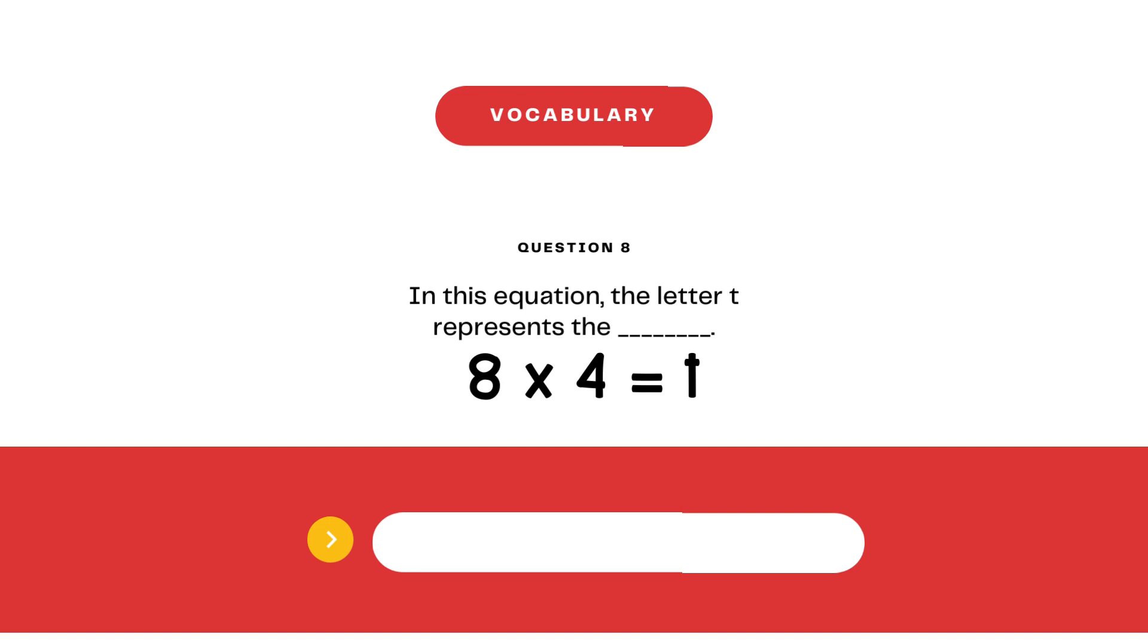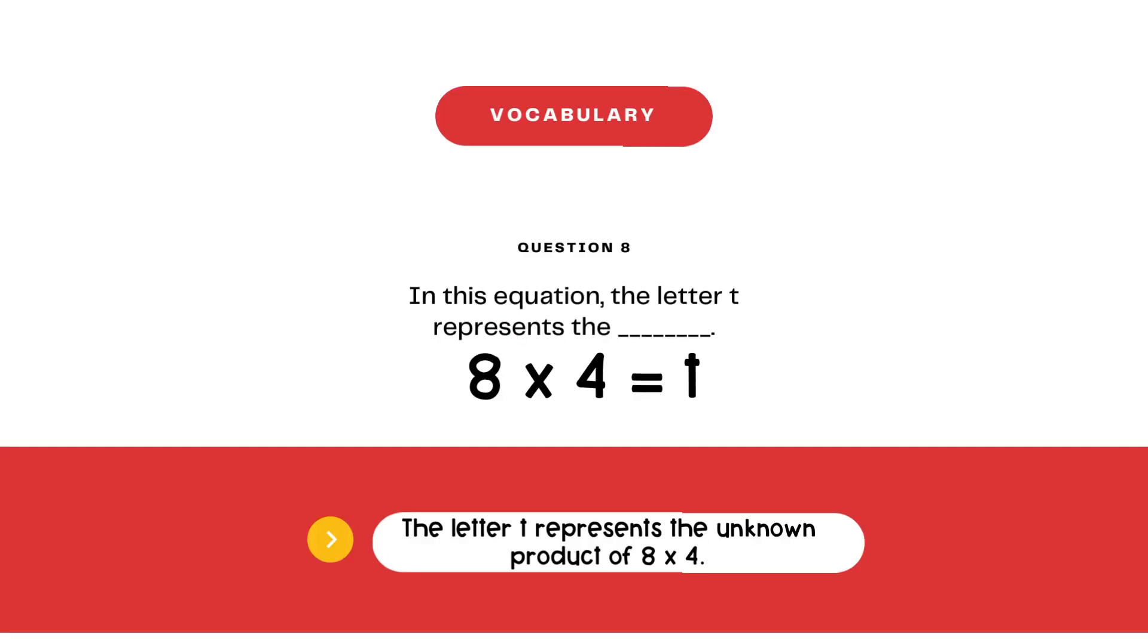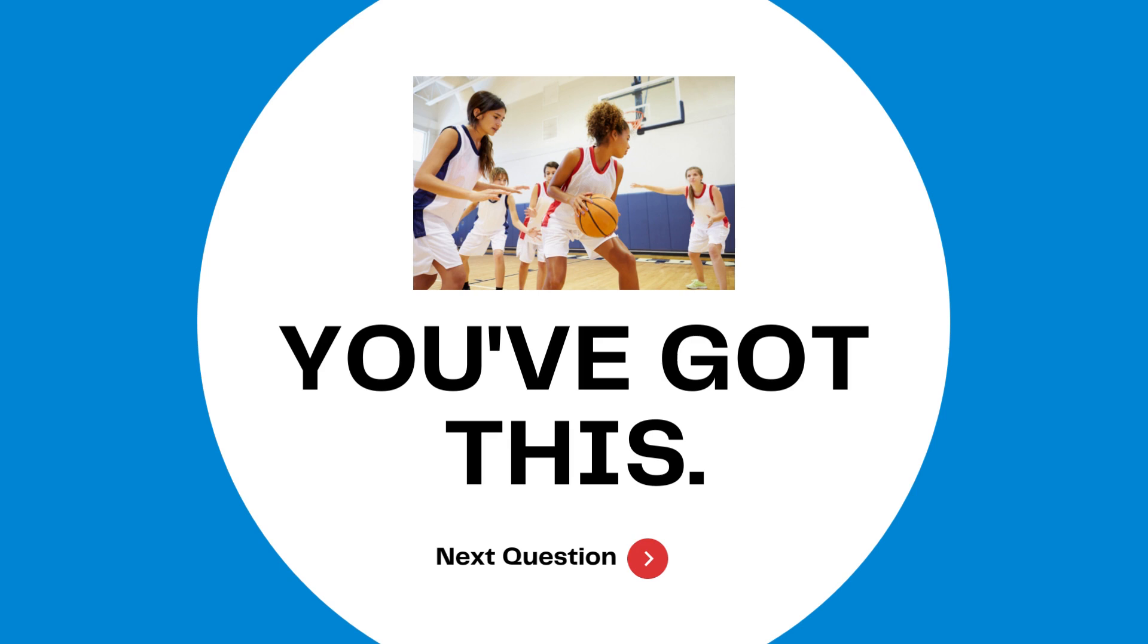Question eight is a vocabulary question. In this equation, the letter t represents the blank. Eight times four equals t. Pause here and press play when you have your answers ready. Answer: the letter t represents the unknown product of eight times four. You've got this, next question.